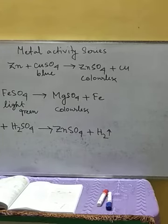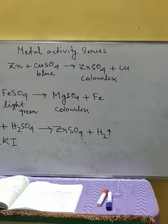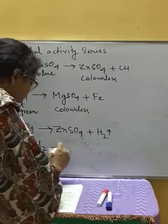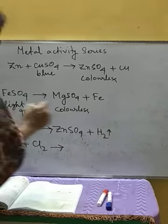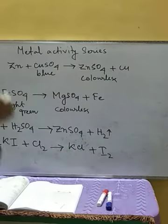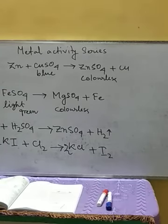Next, for non-metals also this can be done. This is an example of a displacement reaction for non-metals — a KI solution, that is potassium iodide. If we pass chlorine gas into it, as chlorine is more active than iodine, it will displace iodine from its compound. So we are going to get KCl and iodine will be released — 2KCl and iodine. So this is the displacement reaction of non-metals, where iodine and chlorine are the non-metals, one displacing the other.